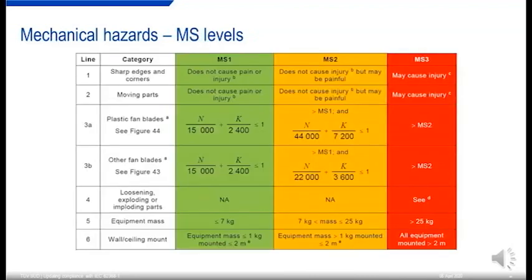The mechanical hazard table covers types including sharp edges, corners, and points; moving parts; fan blades; exploding parts such as components and pressurized systems; and equipment mass when considering stability or wall or ceiling mounting.